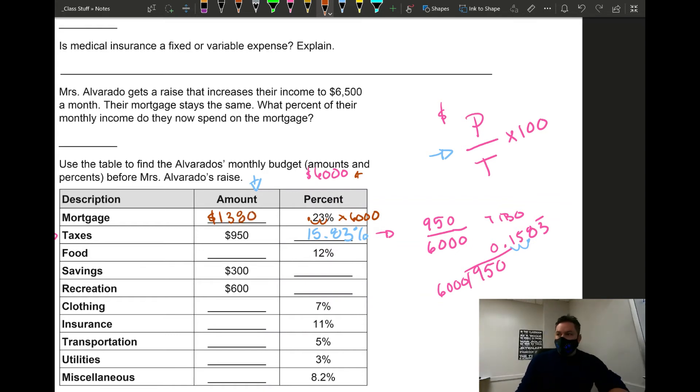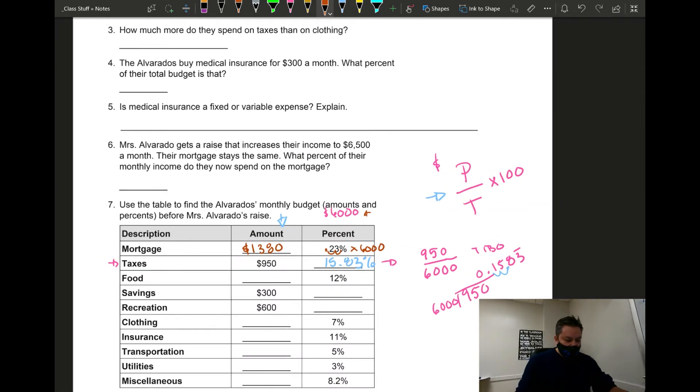$1,380. 23%. That means that 23% of $6,000 is $1,380. And that's all you have to do. Now the only difference is that on number six, look at question number six.